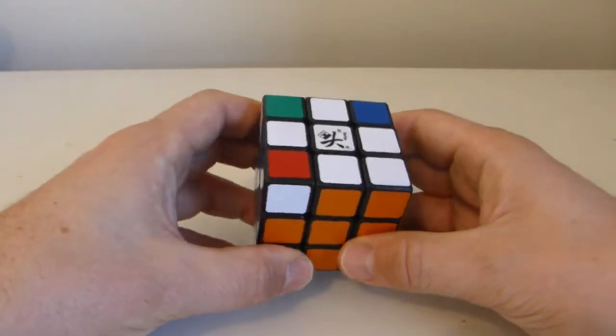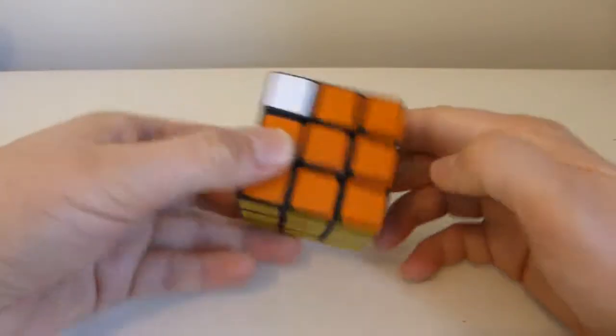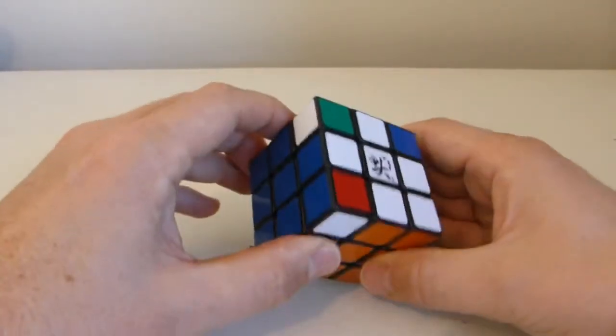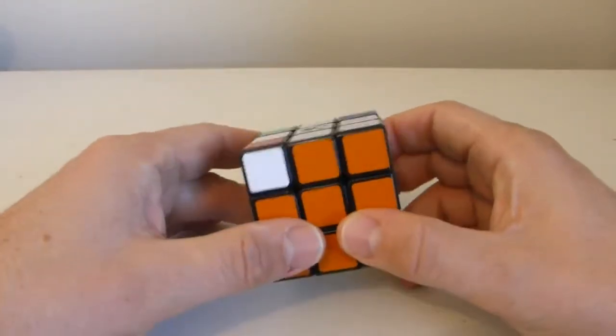You can see that that is a very symmetrical sequence of moves. Let's have a look at what it's changed. Nothing on the bottom two layers at all. In the top layer it hasn't touched the edges. The only thing that it's touched is three corners. And that's why it's called the corner piece series.